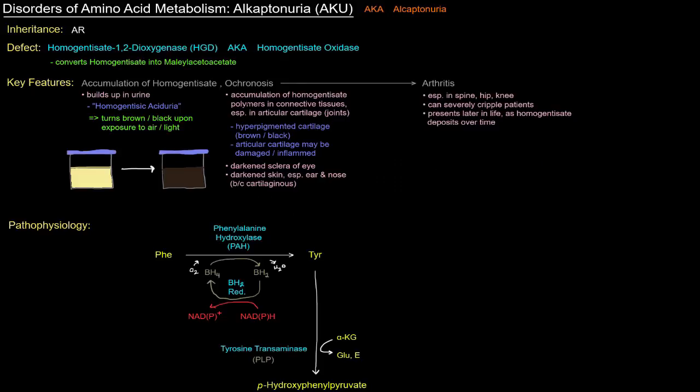Next up here is alkaptonuria, or AKU. Sometimes it's spelled with a C instead of a K, but I mostly see it with a K. Anyway, alkaptonuria is an autosomal recessive deficiency of homogentisate 1,2-dioxygenase, sometimes just called homogentisate oxidase.